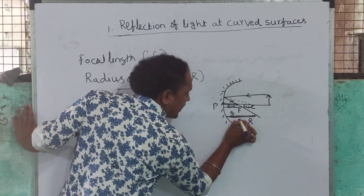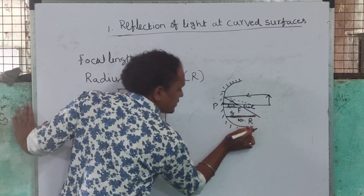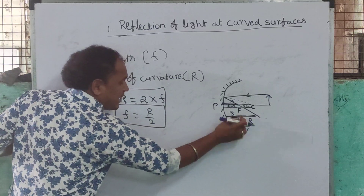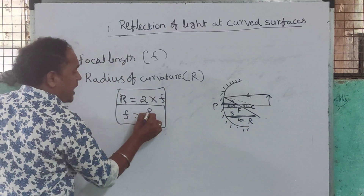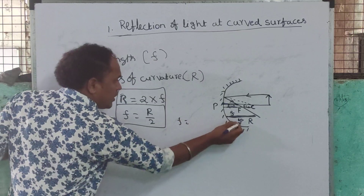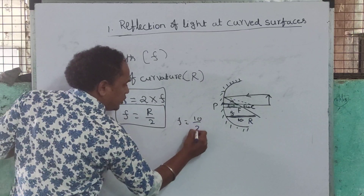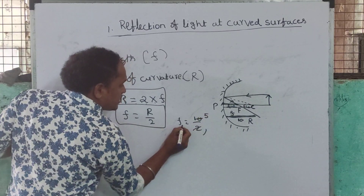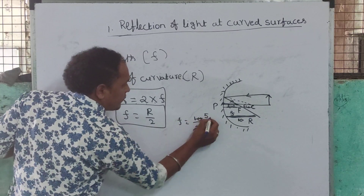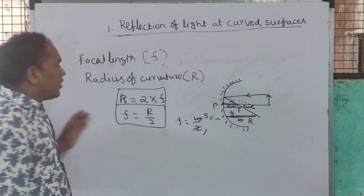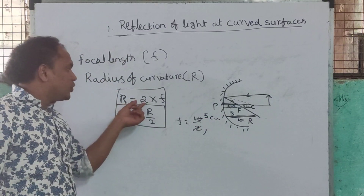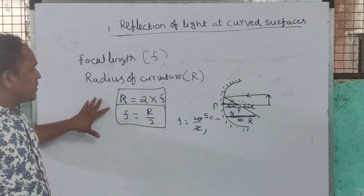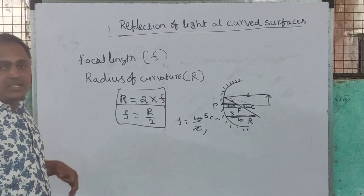If the radius of curvature is 10 cm, then the focal length is half of that, which is 5 cm. So if R is equal to 2 into F and F is equal to R by 2, all of you now understand the relation between focal length and radius of curvature.